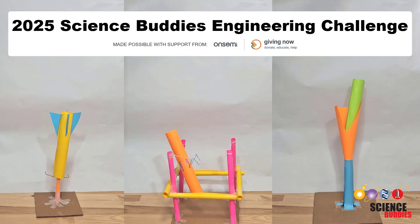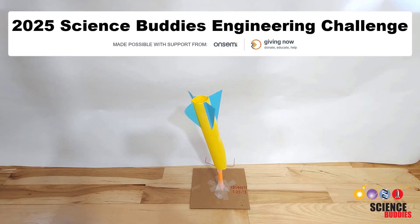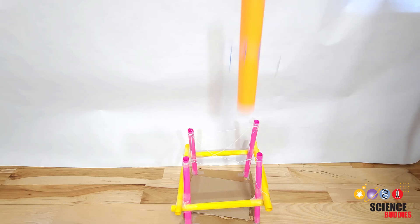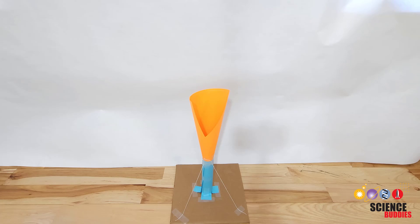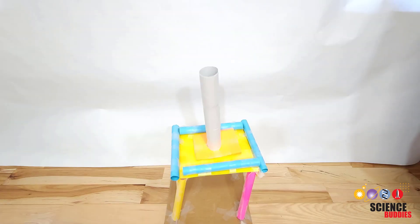This video is an introduction to the 2025 Science Buddies Engineering Challenge. Inspired by recent advances in spaceflight, the goal of this year's challenge is to build a device to catch a falling rocket so it lands vertically.